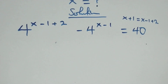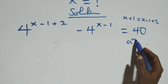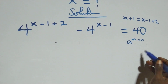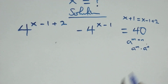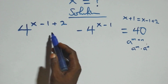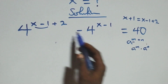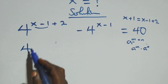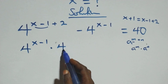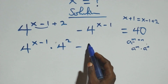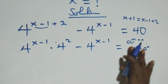The next step: we apply the law of indices. When we have a raised to the power m+n, we can write this as a^m times a^n. Treating (x-1) as m and 2 as n, we get 4^(x-1) times 4^2, minus 4^(x-1), equals 40.